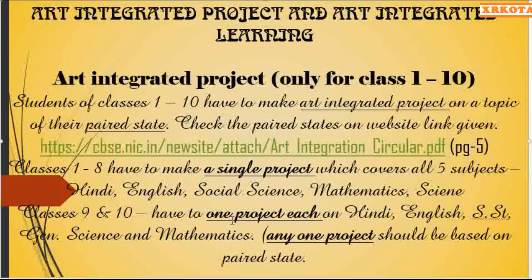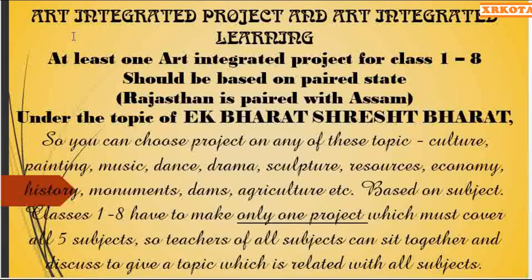Class 9 and 10 have to make one project each in Hindi, English, SST, General Science, and Mathematics. Remember, only any one project should be based on the paired state — not all five. They can choose either language, science, SST, or mathematics for the paired state project. Students of class 1 to 8 have to make only one project, but they have the freedom to make more if they wish.